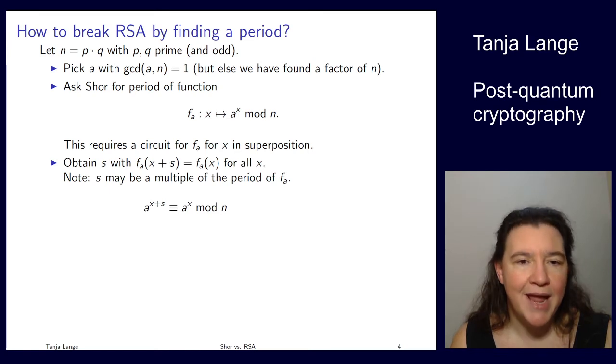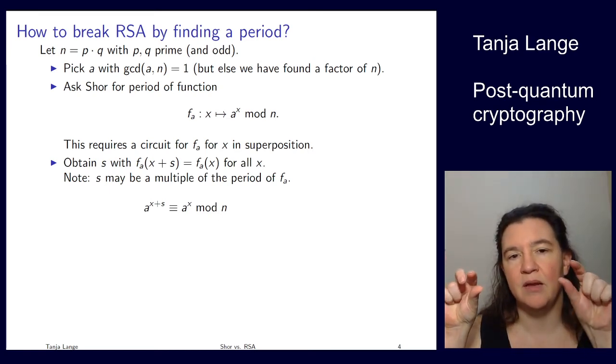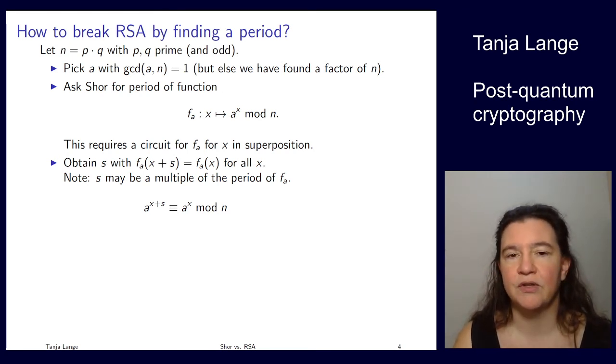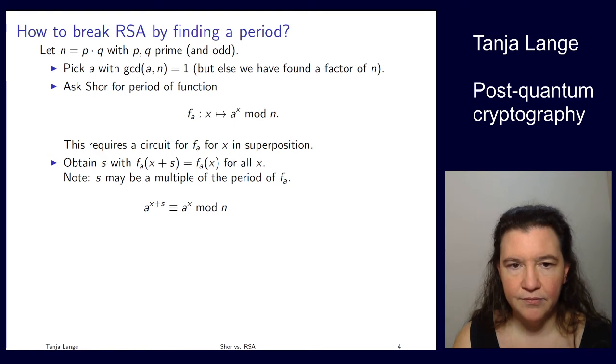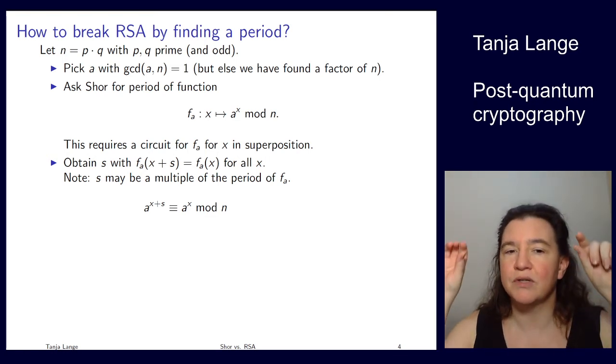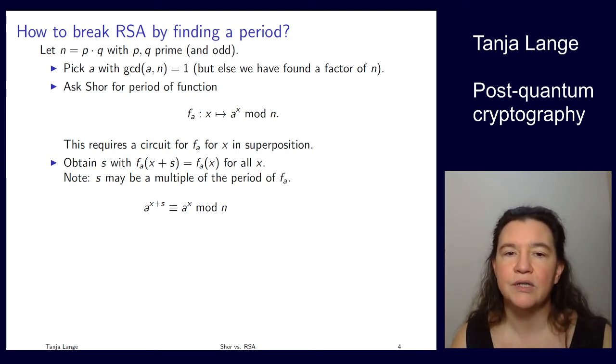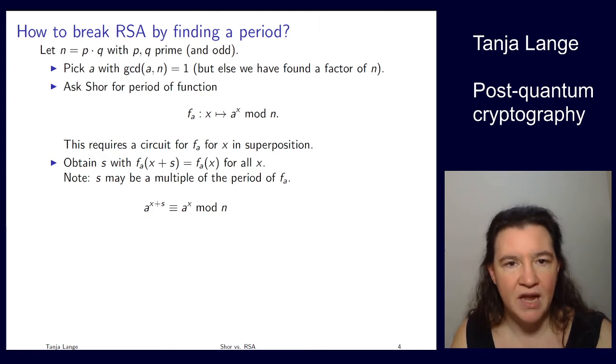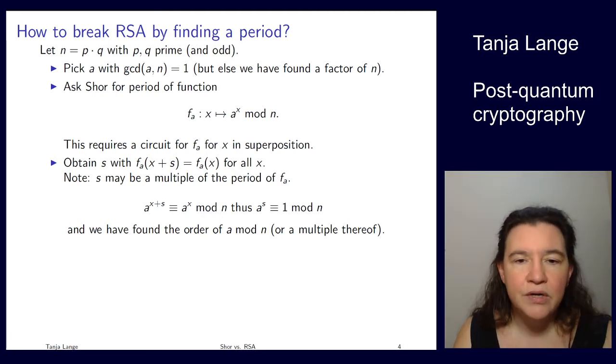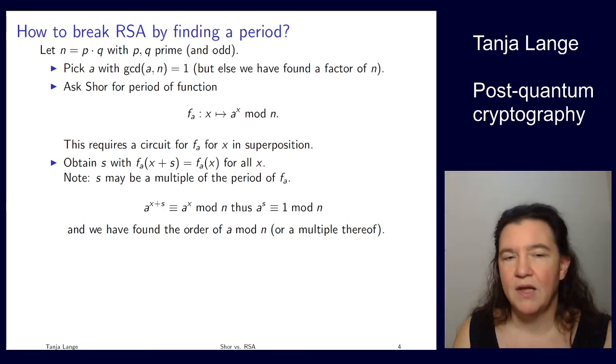And then Shor gives you the period. So period of this function means you get some s so that the function evaluated at x+s is the same as the function at x. There is no guarantee that this s is minimal, so it might be a multiple of the period. So if you're taking a period to have minimality in its definition, then s is not necessarily a period, it might be a multiple of it. And if you have that f(x+s) = f(x), that means the powers, so the a^(x+s) and the a^x are congruent to each other mod n. We move this a little bit around, so we divide both sides by a^x, which we can because a is coprime to n, and so we're getting that a^s is congruent to 1 mod n. And so s is the order of a mod n or a multiple thereof. So we can actually say that Shor has found a mechanism to compute the order of a.